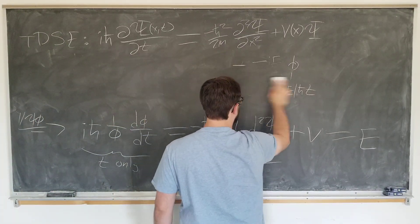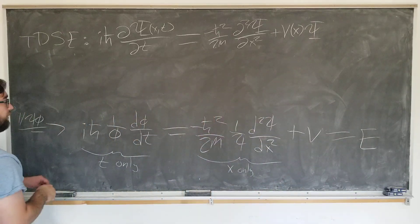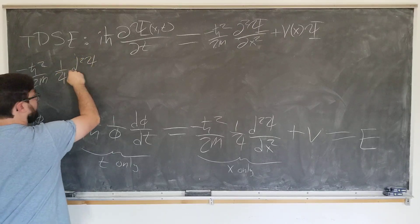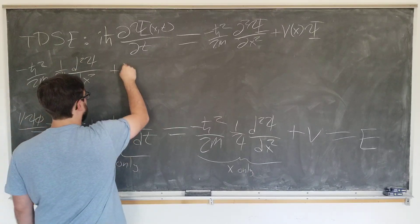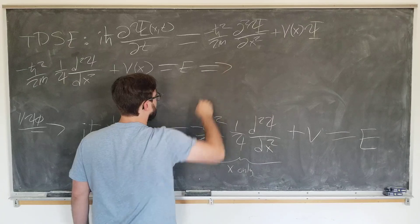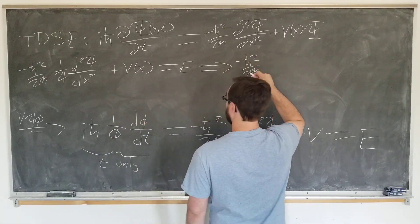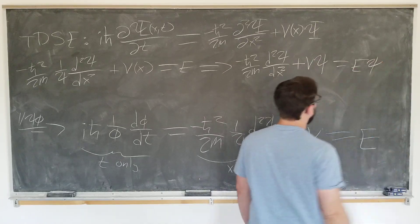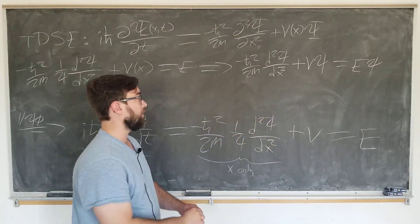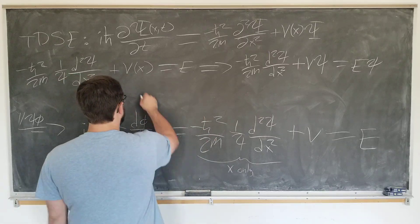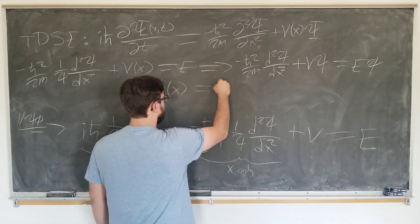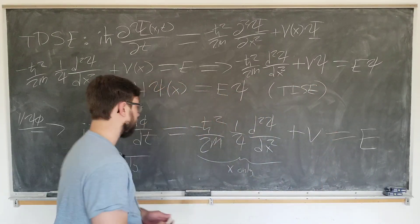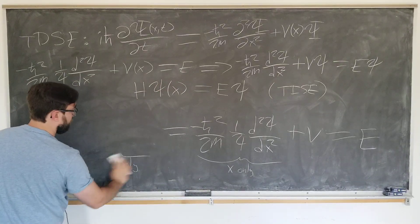Now let's look at the space equation — this will be the important one. The space equation says minus h-bar squared over 2m times (1/psi) d-squared psi by dx-squared plus V(x) equals E. Multiplying both sides by psi, we notice we have the same Hamiltonian from the first part with partial derivatives replaced by ordinary derivatives. So we write the eigenvalue equation: H-hat psi equals E psi. This is the time-independent Schrödinger equation, and it contains all the important details about the quantum system.